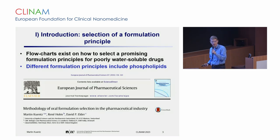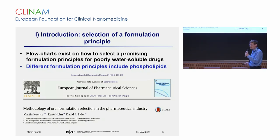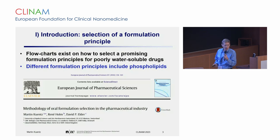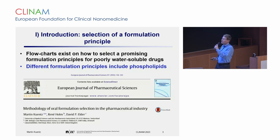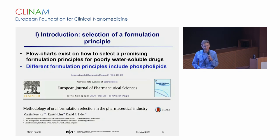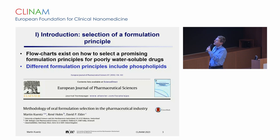First of all, if you do formulation development — and this sounds very basic, but it's very important; I've seen it in my industrial years that it's not always the case that you first identify the biopharmaceutical hurdles. Maybe you don't need a solid dispersion or a fancy supersaturating drug delivery system. Maybe it's enough to just increase the intrinsic dissolution rate a little, because it's dissolution-limited. So really go according to the needs of your compound. Learn about the hurdles — could it be permeability? What is the stability in GI fluids? It should be the biopharmaceutical and physicochemical properties that guide you to identify viable formulation principles.